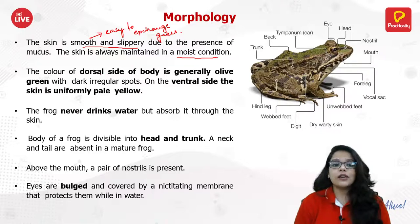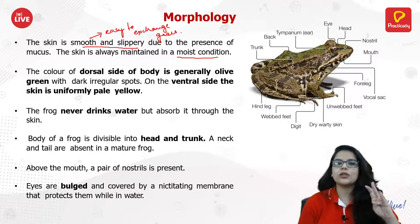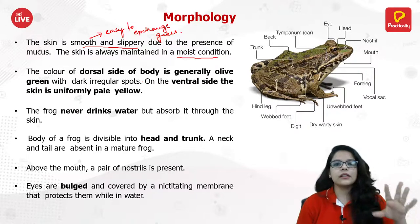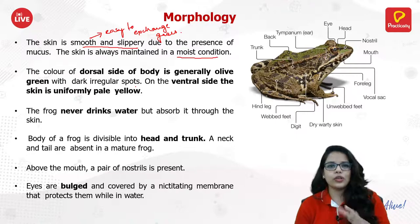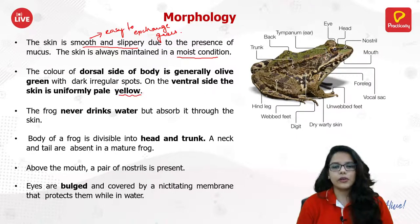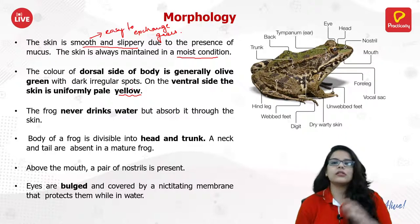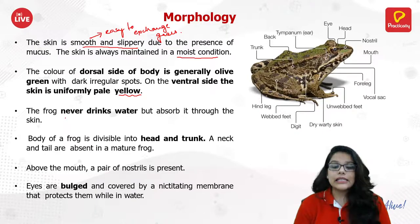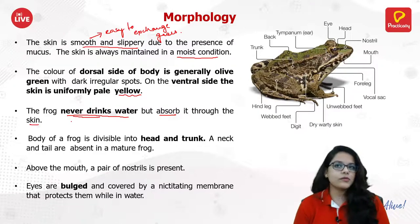The color of the dorsal side of the body is generally olive green with dark irregular spots. The ventral side is yellowish. Some species have a brownish tinge and others a more greenish tinge depending on the species. Importantly, a frog never drinks water but absorbs it through its skin, which is why the skin is so moist and mucusy.